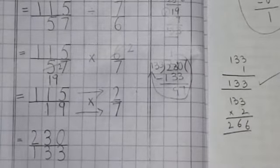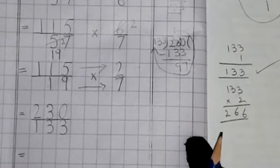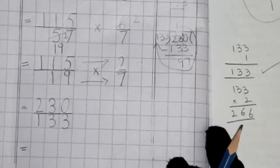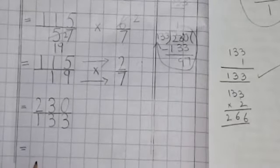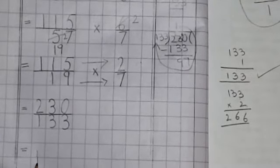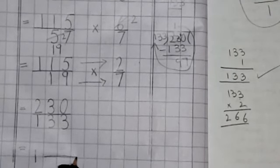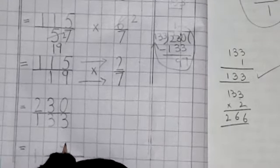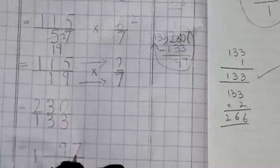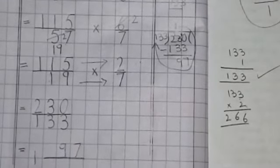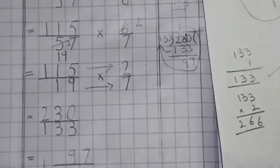Equality sign. How do we write? 1 whole 97 by 133.